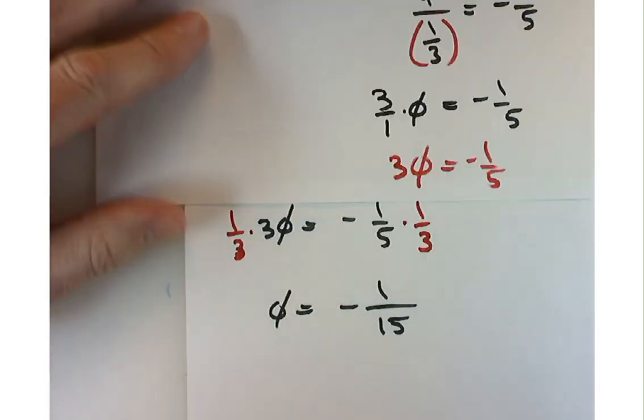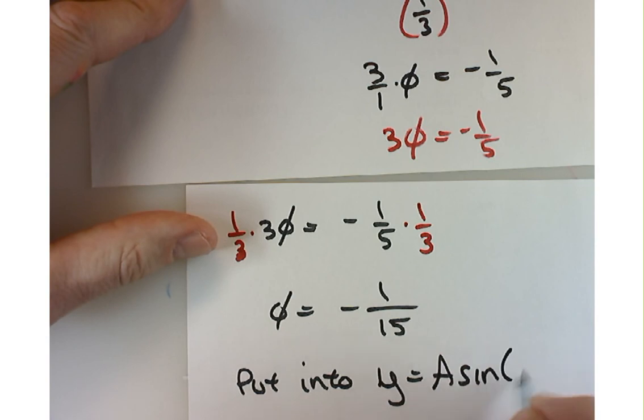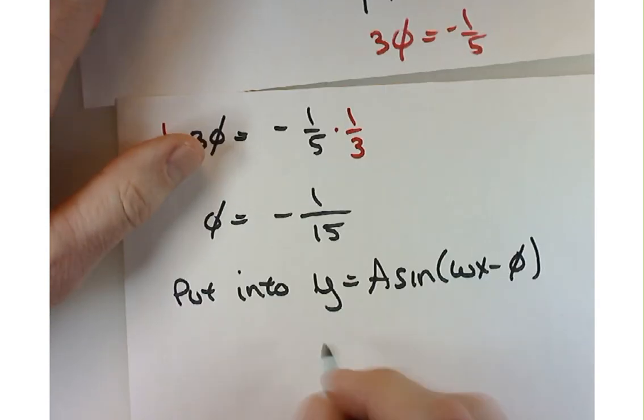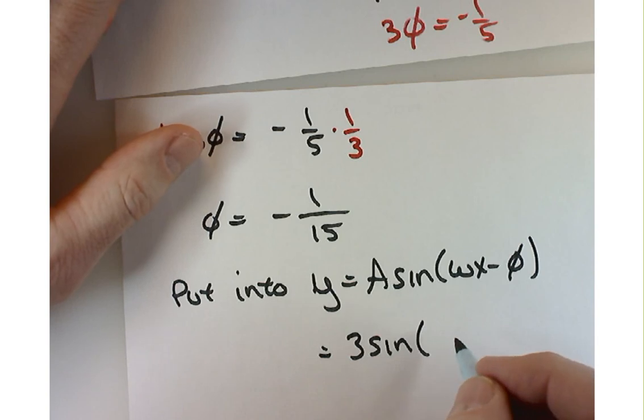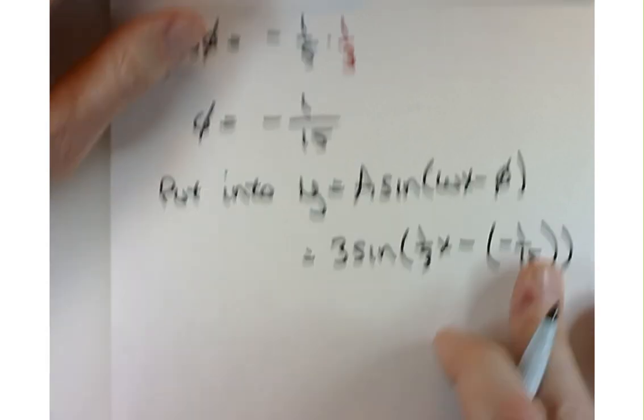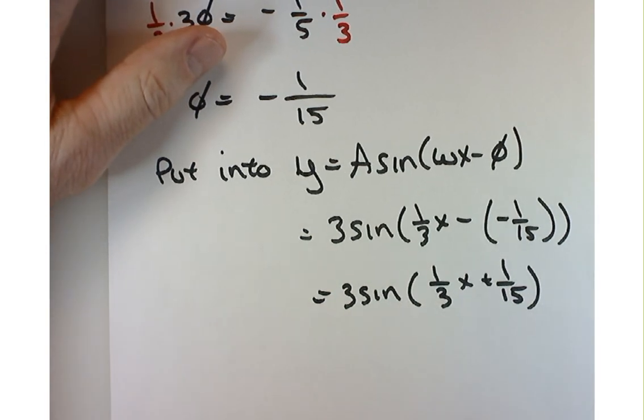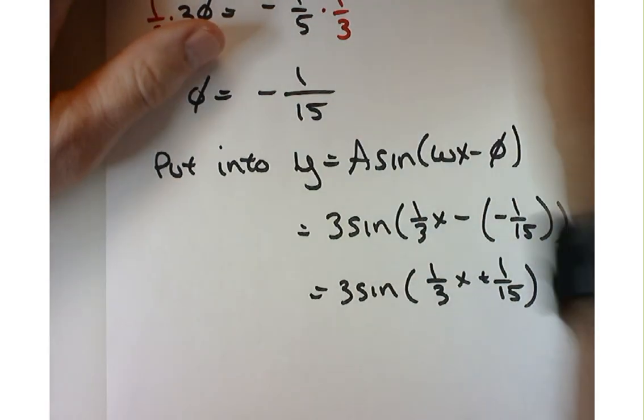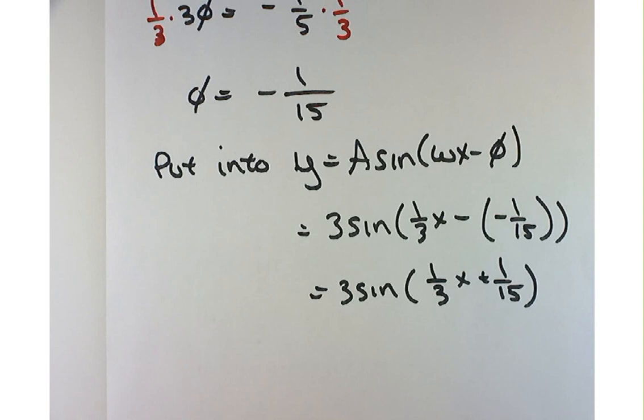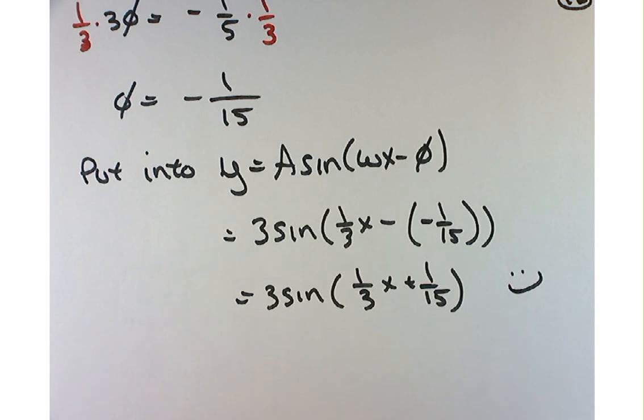Earlier today we had a problem like this. There's probably a more user-friendly way to solve this. To solve 3 phi equals negative 1 fifth, multiply by the reciprocal of 3. So 1 third times 1 third. That's going to leave me with phi equals negative 1 fifteenth. Last but not least, we're going to put that into this model: Y equals A sine of omega x minus phi. So that all turned out to be 3 times sine of 1 third x minus negative 1 fifteenth. Then somebody in the front row kindly said that's the same thing as plus 1 fifteenth. And that's it.